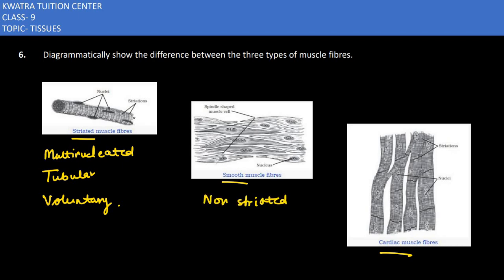We have to say non-striated. We have to say shape by spindle, not tubular but spindle shape. We have to say uninucleate because in one cell there is one nucleus. So we look at this particular cell, we have one cell and there is one nucleus so it is called uninucleate. And the other thing is involuntary.